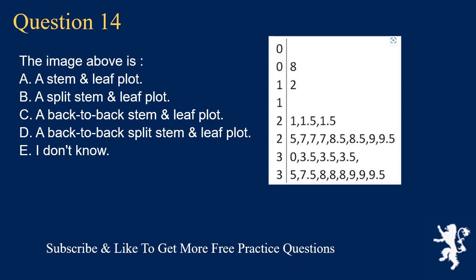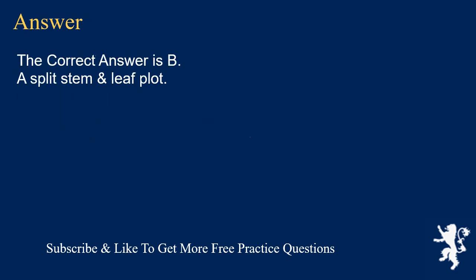Question 14: The image above is A. a stem and leaf plot, B. a split stem and leaf plot, C. a back-to-back stem and leaf plot, D. a back-to-back split stem and leaf plot, E. I don't know. The correct answer is B, a split stem and leaf plot.